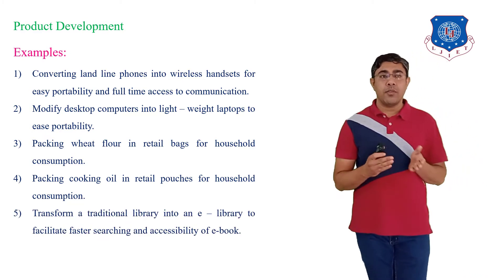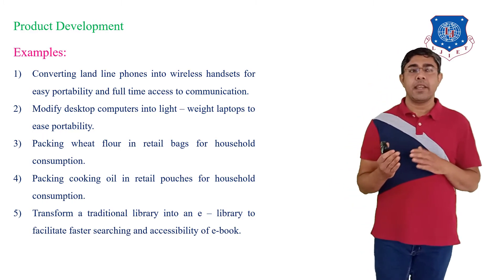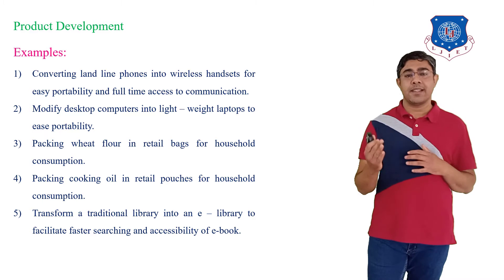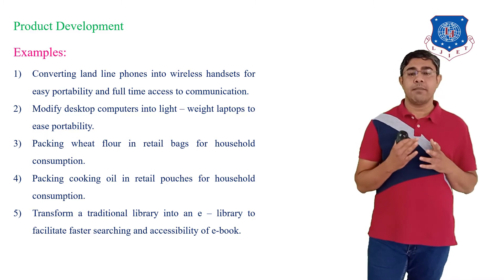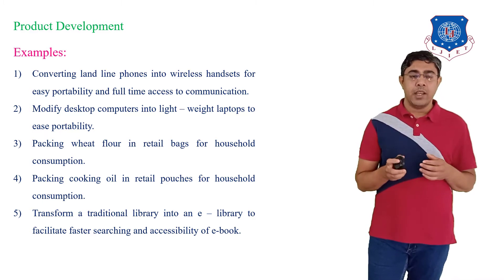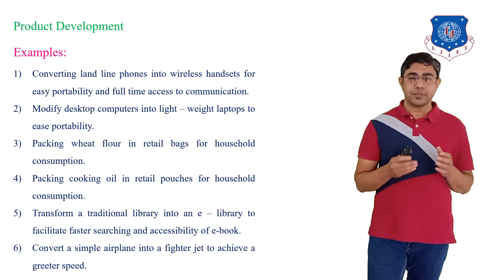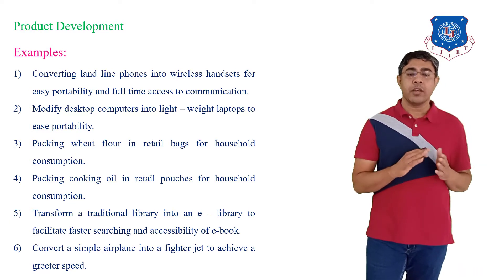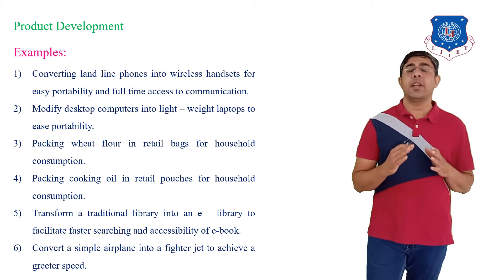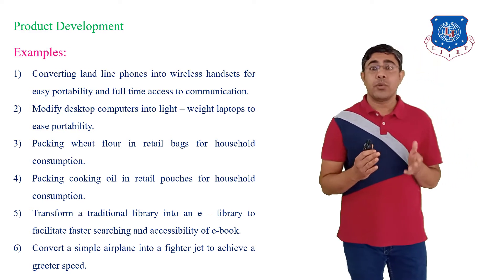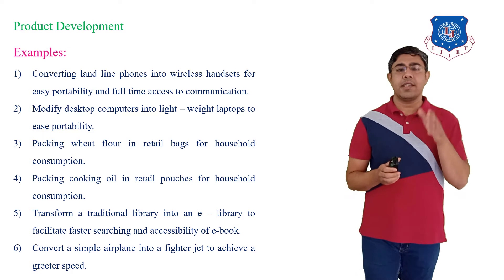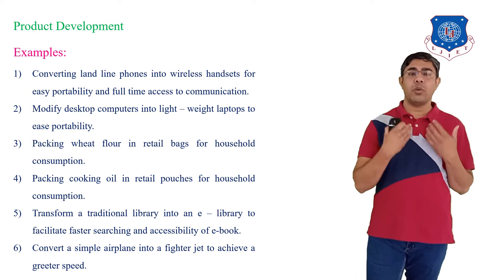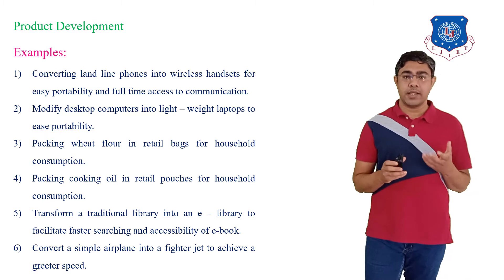Fifth is transforming a traditional library into an e-library for the facilities of faster searching and easier accessibility of use. And sixth is converting a simple airplane into a fighter jet to achieve greater speed. So these are the examples considered here, but there are many more examples you can consider.